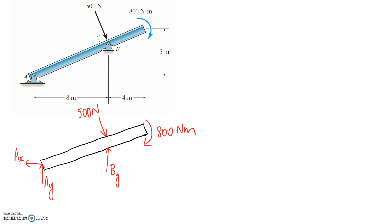Now we just need to go ahead and solve for the reactions. The first thing I'm going to do is get some angles on this diagram. We're going to be able to calculate the angle that this beam sits at, and then that's going to help us calculate the angle that this force is applied at. We can see it's perpendicular to the beam, but since we've been given horizontal and vertical distances, we're going to need to change this force into horizontal and vertical components, so the angle is going to help us do that.